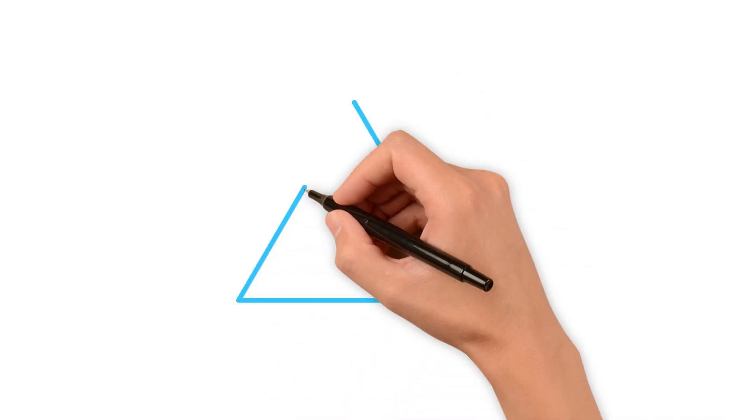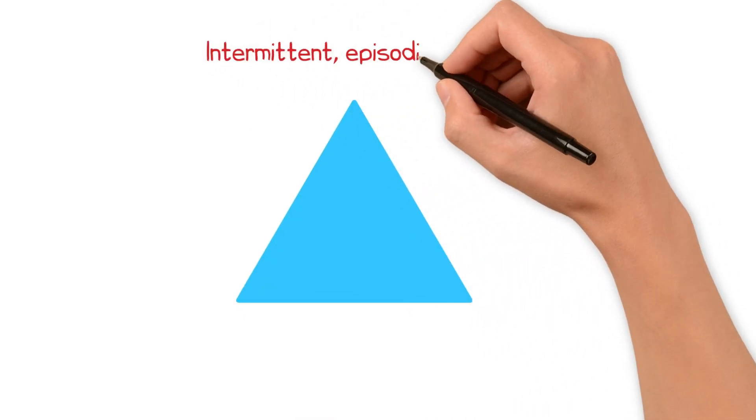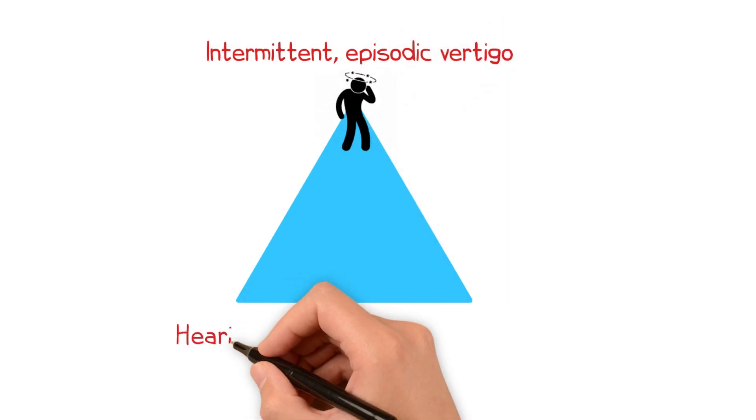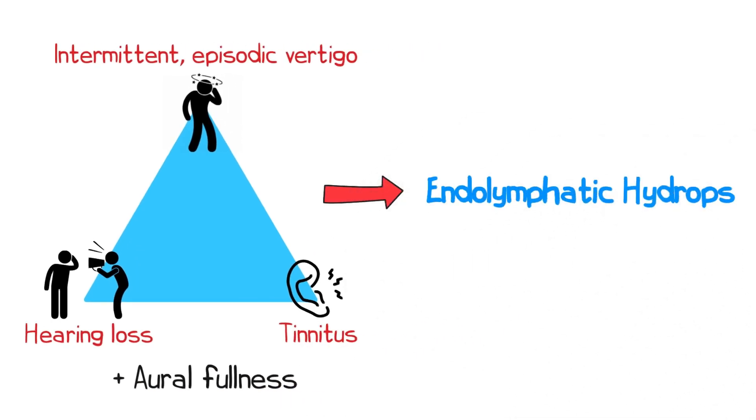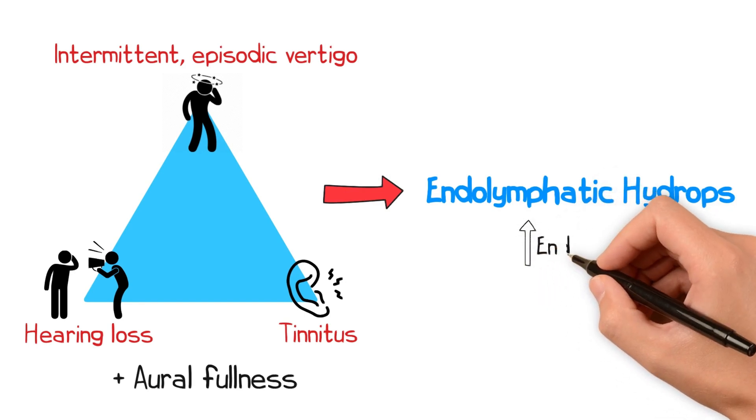Meniere's disease refers to a triad of intermittent episodic vertigo, hearing loss, and tinnitus, often accompanied by aural fullness. This is thought to be due to endolymphatic hydrops, an excessive buildup of endolymph.